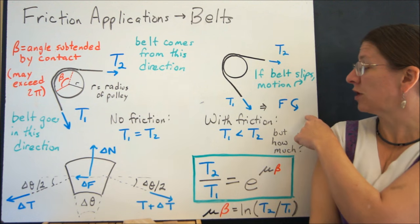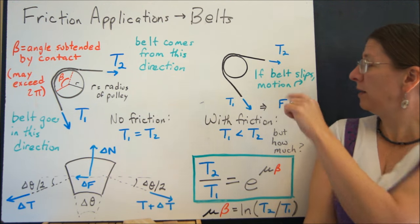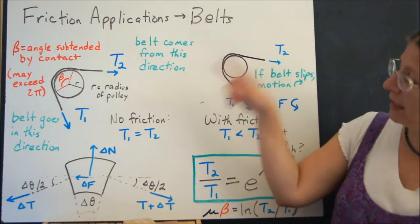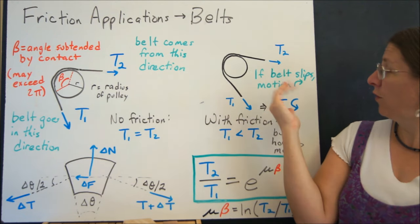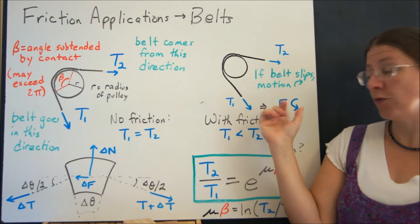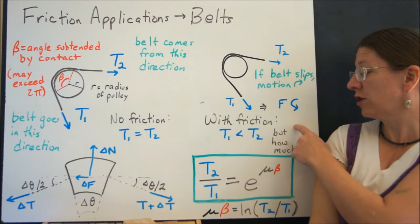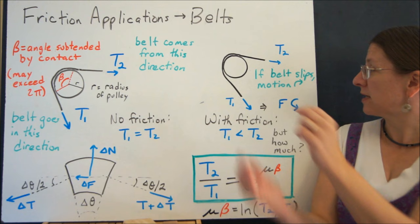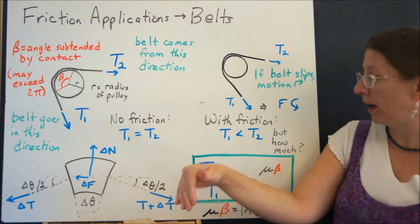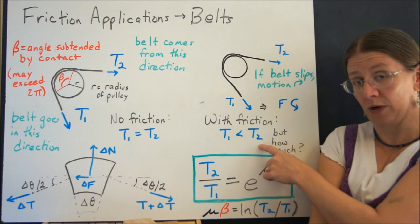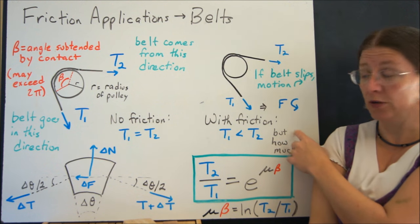But if there is friction, then what I have is here, the belt is tending to go this way. But if it slips, that means the slip is this way, so your friction is going to oppose that motion, so friction is going this way. With friction then, if you just think about this, I've got T2 coming this way and friction and T1 going that way, so T2 has to be bigger than T1. But how much bigger is the question?